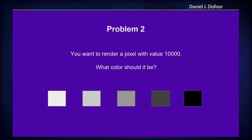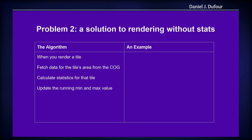Problem number two — and this question's for the audience. I hand you a pixel and its value is 10,000. What color should it be? Who wants to take a stab at this? So what information would you want? What questions would you want to ask in order to decide what color in grayscale you should choose for a value of 10,000? Someone said min/max — looking at the min/max for the whole raster. You guys got it. So we don't have the min/max, so we're going to have to compute it while we're doing the rendering.